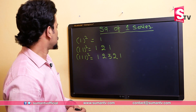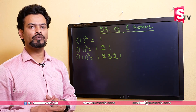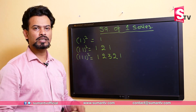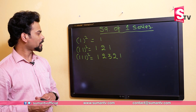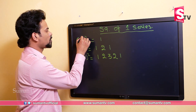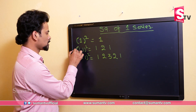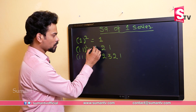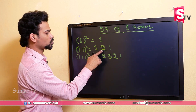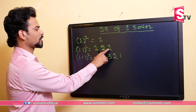Now let's learn a fun trick — that is the square of the one-series. The one-series means numbers consisting only of the digit 1: so 1, 11, 111, 1111, and so on. To find the squares: for 1 squared, we write just 1. For 11 squared, there are two ones, so we write 1, 2 and then decrease back to 1, giving us 121.